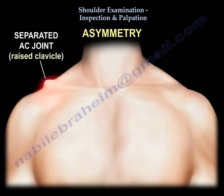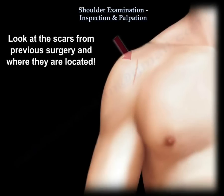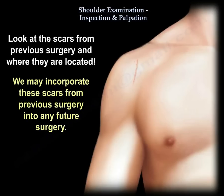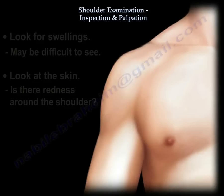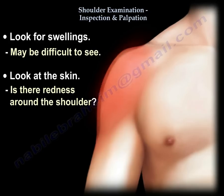We check for symmetry. Then we look at the scars of previous surgery and where they are located, because we incorporate these scars in our future surgery. We also look at swelling — it's hard to see but sometimes you can see it. We also look at the skin: is there redness around the shoulder?